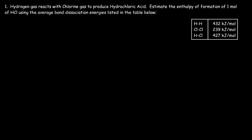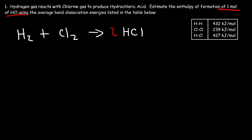The first thing we need to do is write a balanced chemical equation. Hydrogen gas reacts with chlorine gas to produce hydrochloric acid. To balance it we need to put a two, however we want to estimate the enthalpy of formation of one mole of HCl, so we put a one in front of HCl and one half in front of hydrogen gas and chlorine.